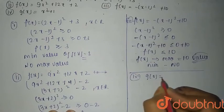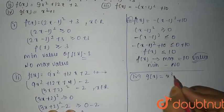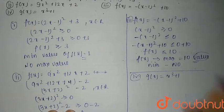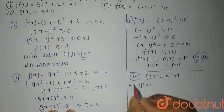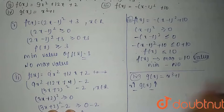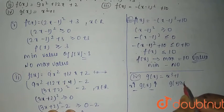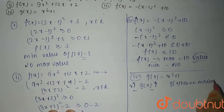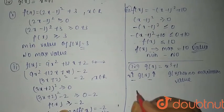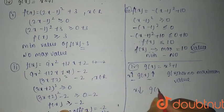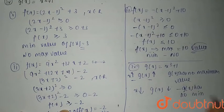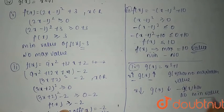The fourth function is g(x) = x³ + 1. As x increases, g(x) also increases, so g(x) has no maximum value because it goes to infinity. Similarly, as x decreases, g(x) also decreases, so g(x) has no minimum value either. There is no particular minimum value.